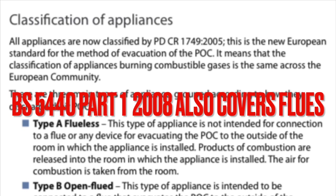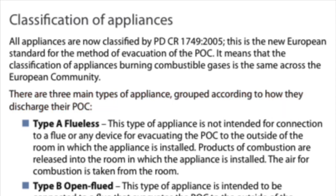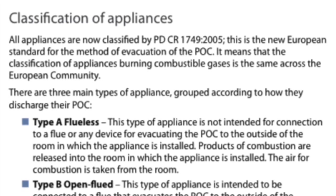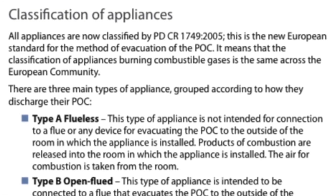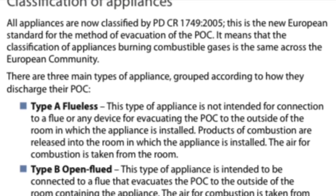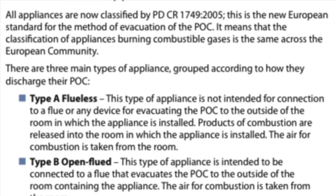All appliances are now classified by PDCR1749 2005, a new European standard for the method of evacuation of the products of combustion. It means the classification of appliances burning combustible gases is the same across the European community. There are three main types grouped according to how they discharge products of combustion: Type A is flueless, Type B is open flued, and Type C is room sealed.